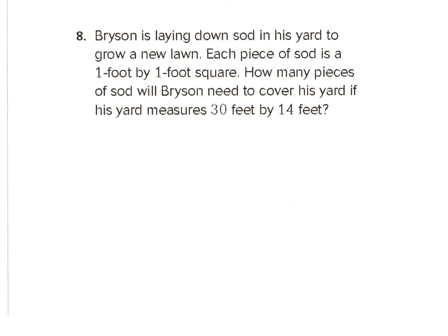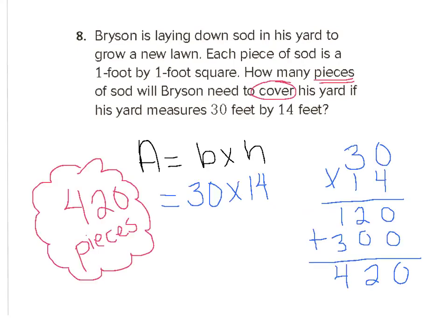Here's number eight. Bryson is laying down sod in his yard to grow a new lawn. Each piece of sod is one foot by one foot square. How many pieces will Bryson need to cover his yard if it measures 30 feet by 14 feet? Draw a rectangle and work it out. The answer is 420 pieces — all we had to do was multiply 30 feet times 14 feet to get 420.